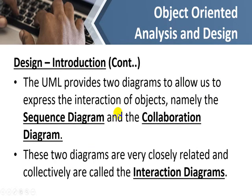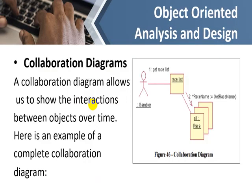UML provides two diagrams to express the interaction of objects: the sequence diagram and the collaboration diagram. These are known as interaction diagrams. A collaboration diagram tells us how objects interact or collaborate with each other. It allows us to show the interaction between objects over time, giving us a concept of interaction along with sequence. Here is an example of a complete collaboration diagram containing a gambler object.